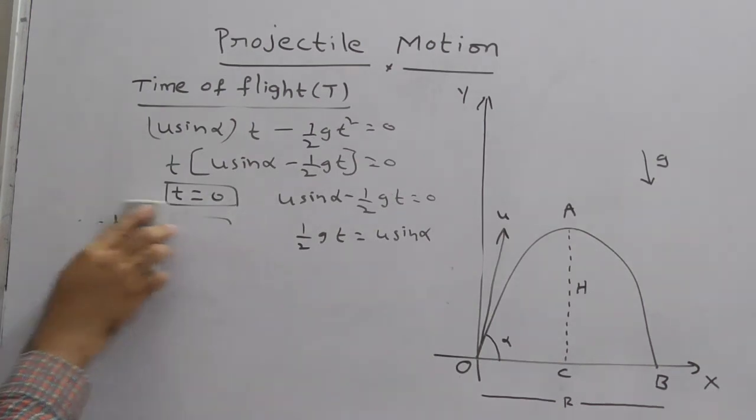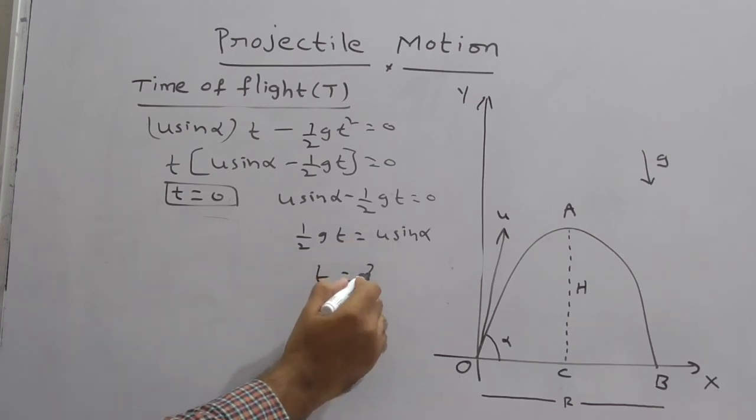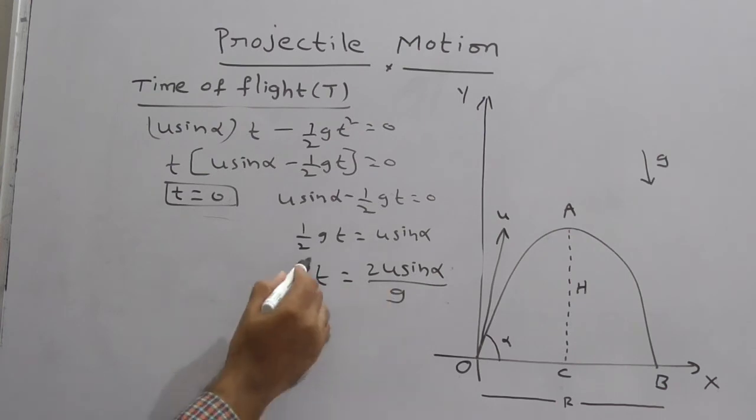So by using this, what is t? Yes, very good. So here you can write t as, so cross multiply, 2u sin alpha by g. So here we got two values: t equal to 0 and t is equal to 2u sin alpha by g.